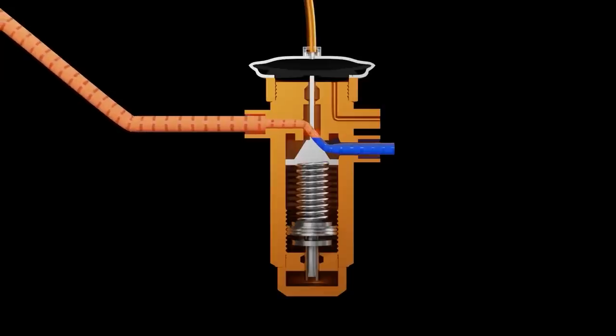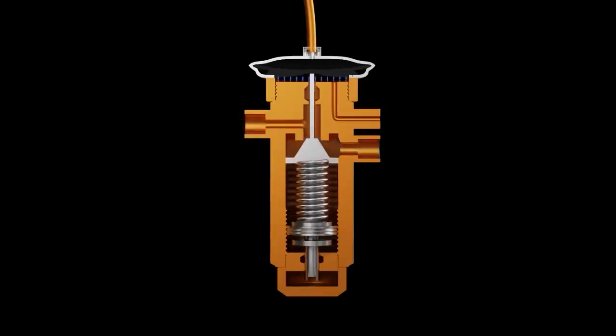Does anybody know why that happens? It's the TXV — the external equalizer is the closing force for the valve. That external equalizer is just a pressure tap into the end of the evaporator coil, into the suction line. As that suction line pressure keeps increasing, the valve closes and closes until it slams shut. That's the nature of a hard shutoff TXV — and all modern valves we work on in air conditioning are hard shutoff TXVs.